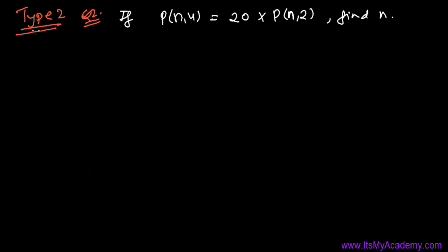Here I have the second question from Type 2 where we need to find out the value of n. The question is: if P represents the permutation of n objects taken r at a time, and P(n,4) equals 20 times P(n,2), then how can we find the value of n?